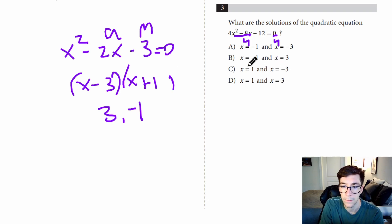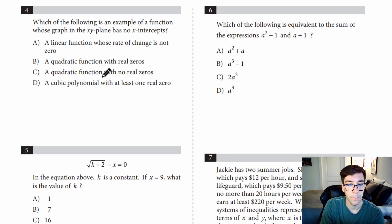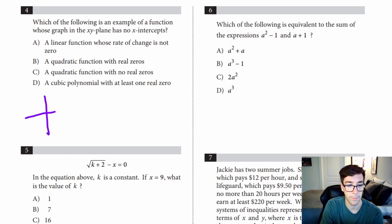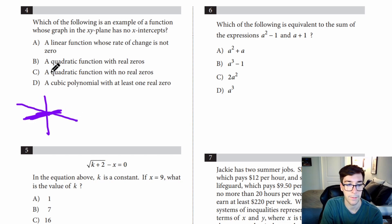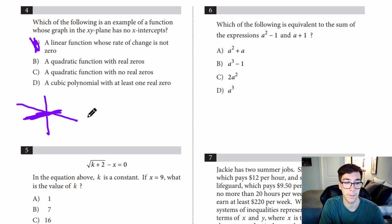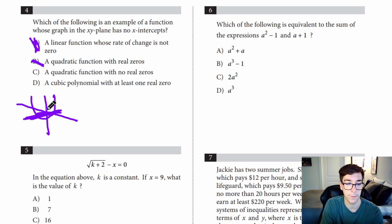Number four: which of the following is an example of a function whose graph in the XY plane has no X intercepts? That means the graph doesn't hit the horizontal line. A linear function whose rate of change is not zero would hit zero, so not that. A quadratic function with real zeros — a zero is where it hits that axis, so not that either. A quadratic function with no real zeros means it doesn't touch the horizontal X axis. It's going to be C.